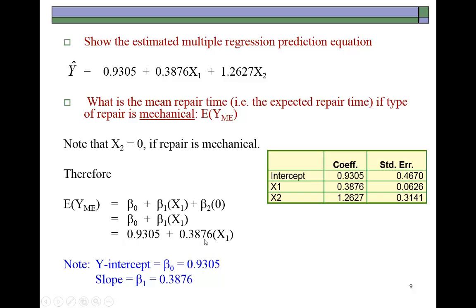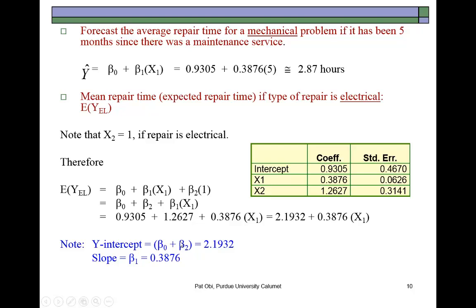So the mean repair time for a mechanical problem is B0 + B1·X1, with the estimated coefficients substituted in. Now, to forecast the average repair time for a mechanical problem if it has been five months since maintenance service: X1 = 5. Plugging in, this comes out to be 2.87 hours. So the average repair time for a mechanical problem on a device that was last serviced five months ago would be about 2.87 hours.